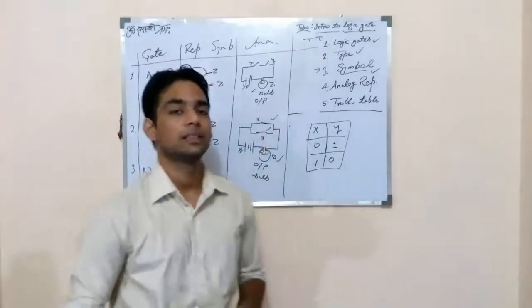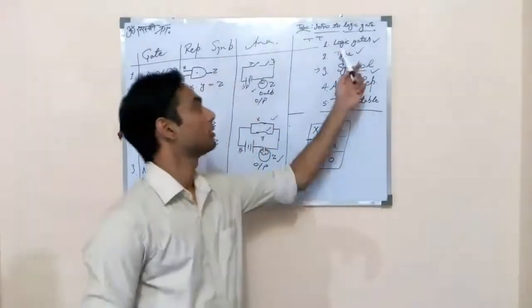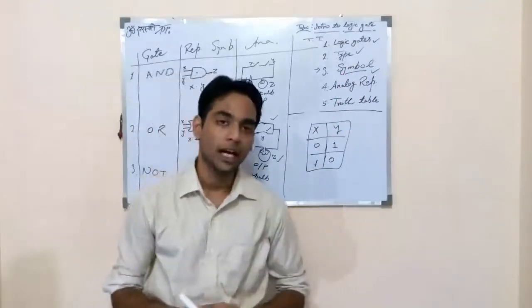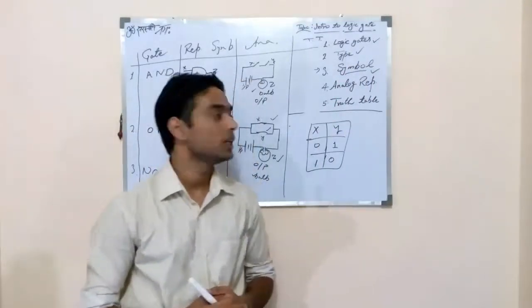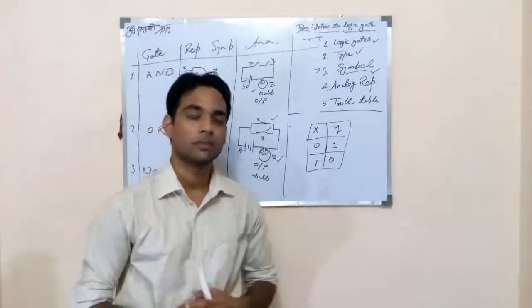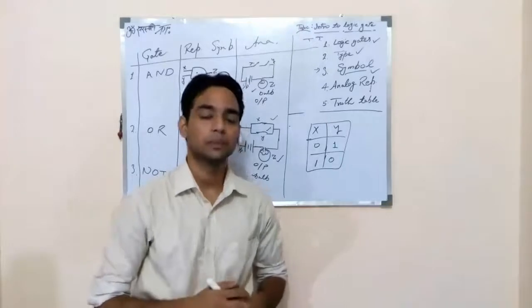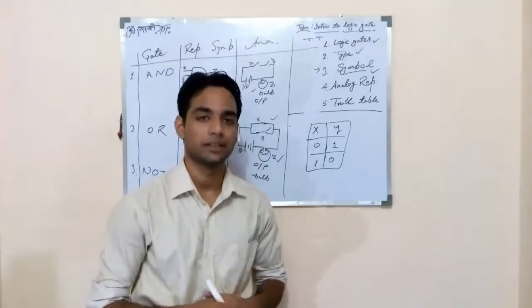So, in this lecture, we know about logic gates, type of logic gates, symbol, analog representation of symbol. How can we draw that truth table? If you like this video, then please give a thumbs up. Subscribe and share. Keep learning. Thank you.